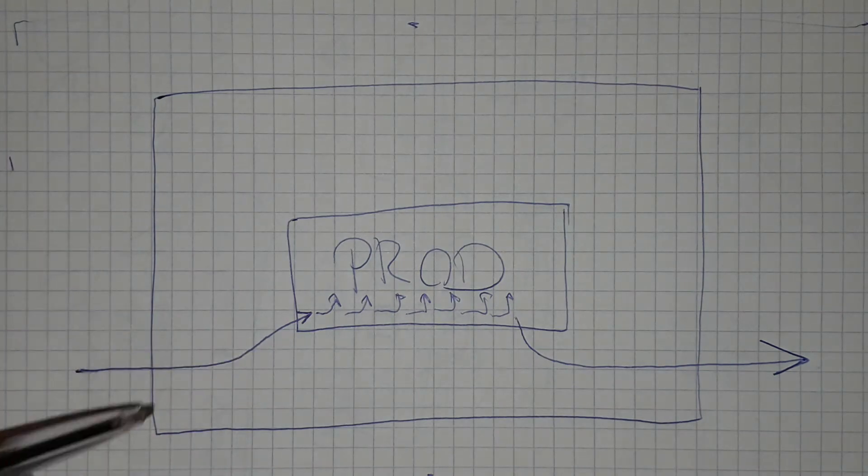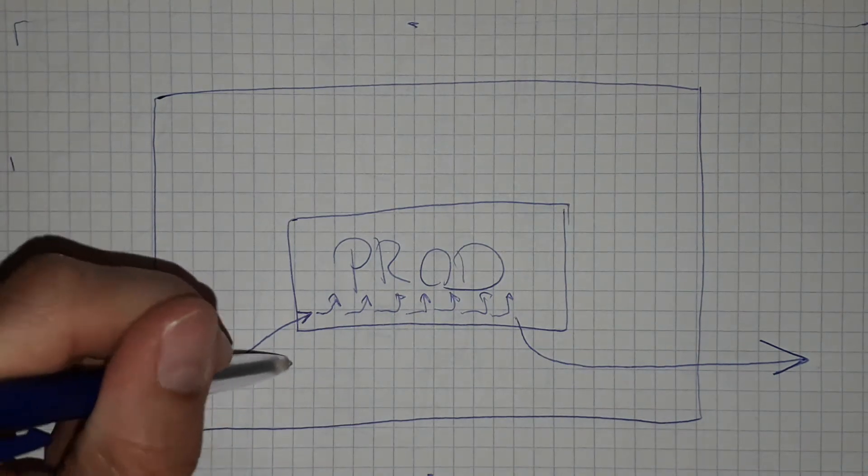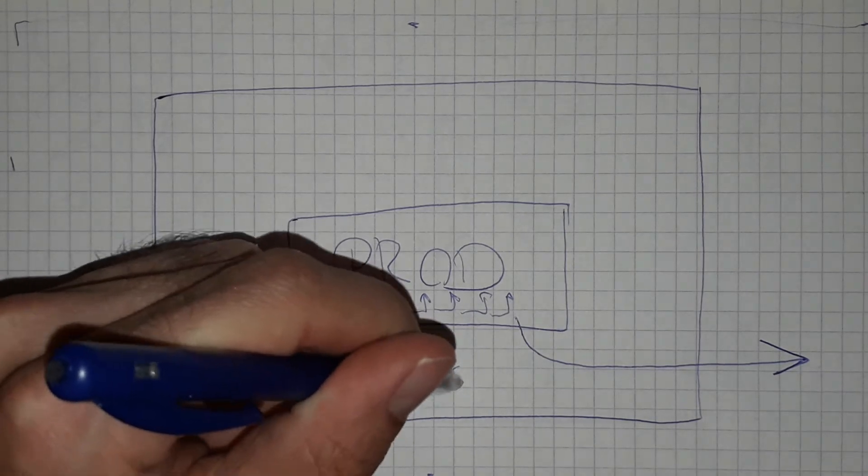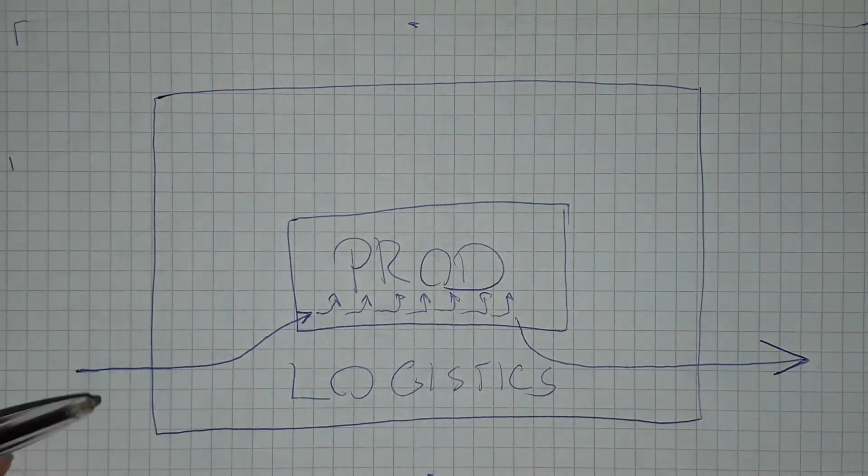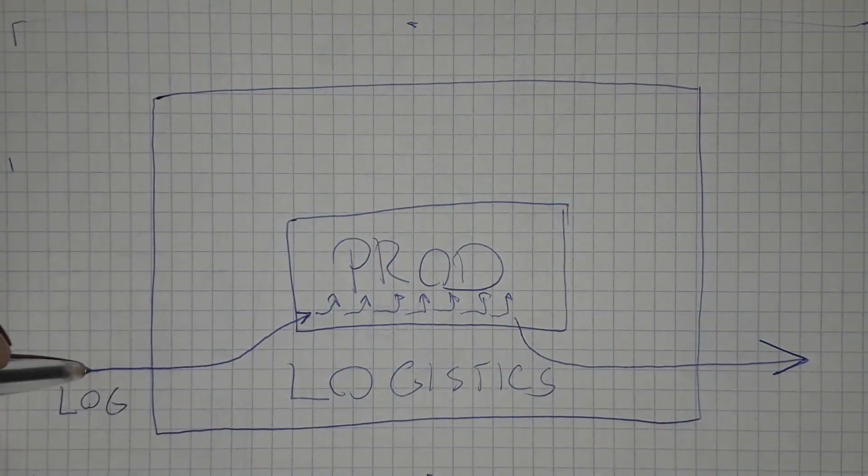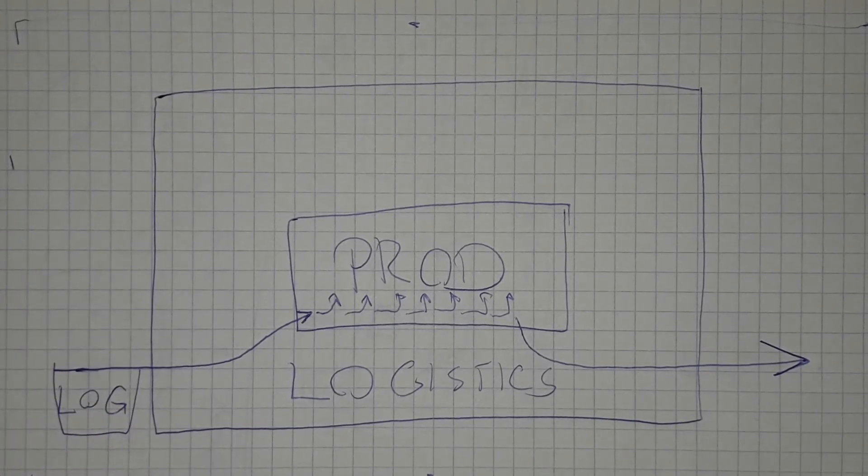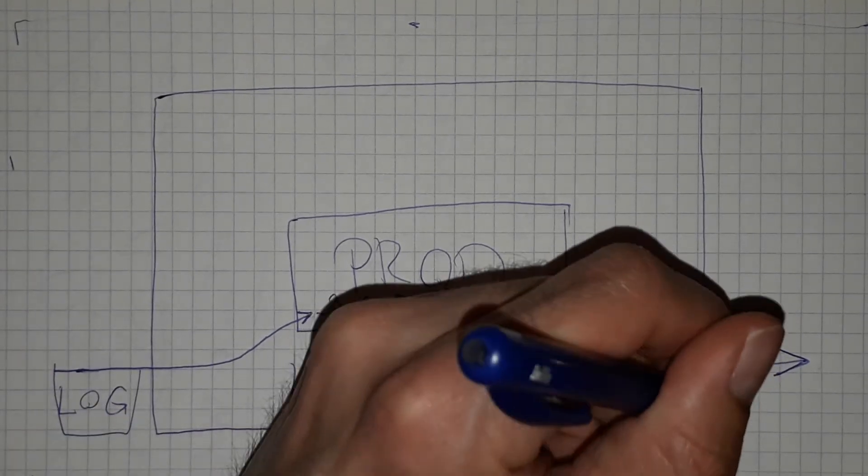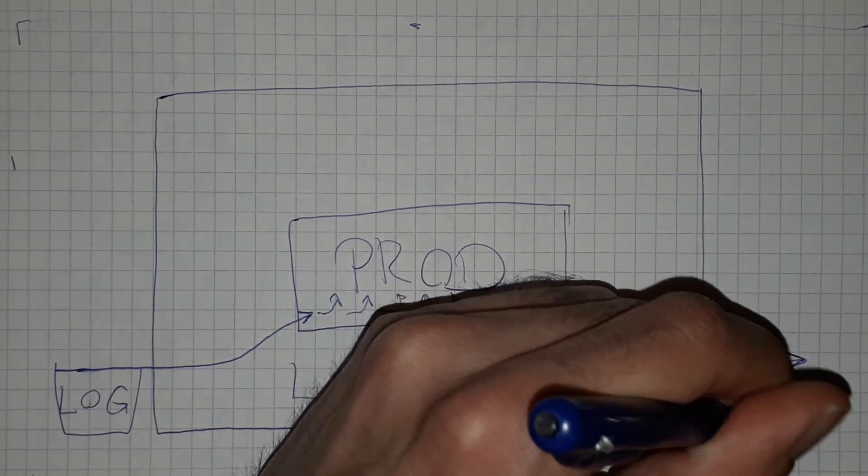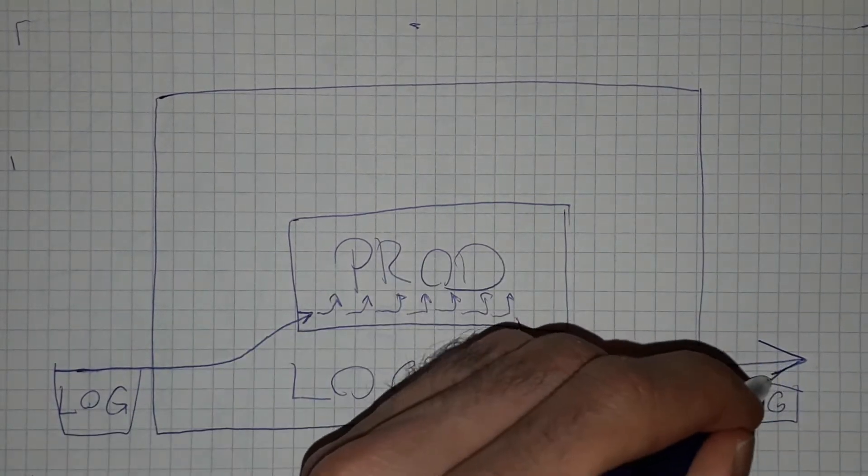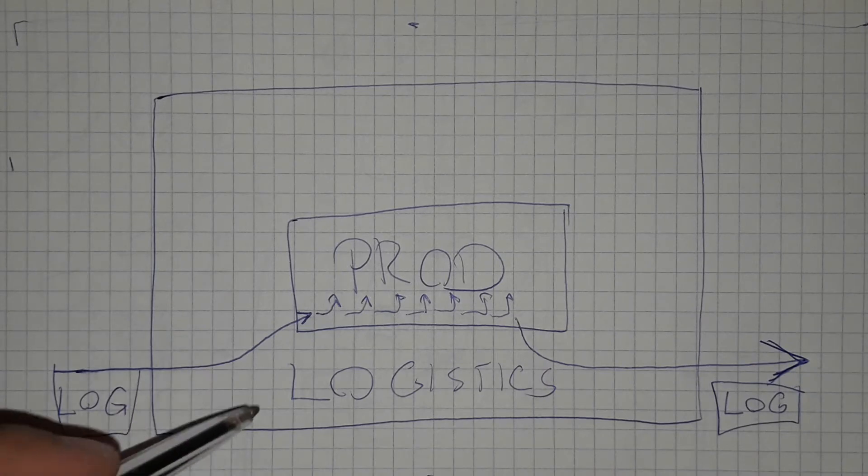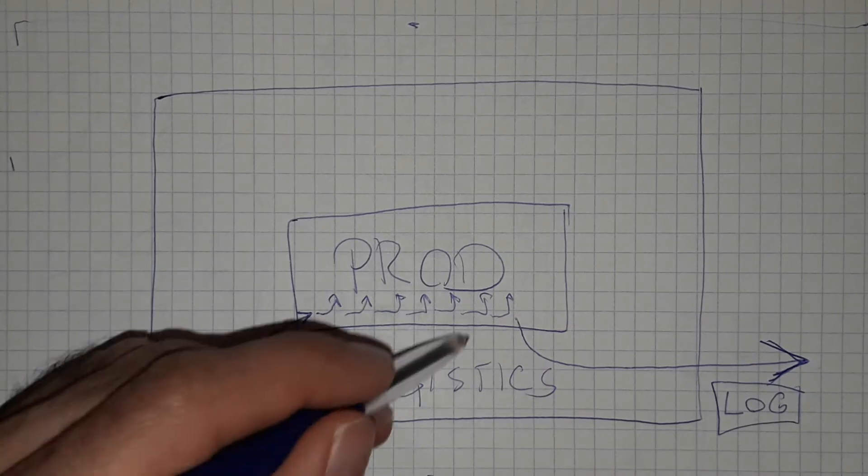So this everything is the department of logistics. We can have logistics in the inbound, and then we of course have the logistics outside on the outbound, and we have logistics internally in the factory.